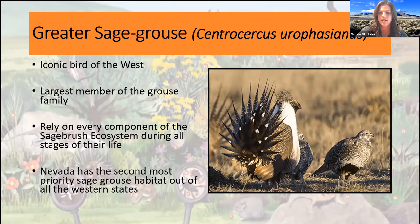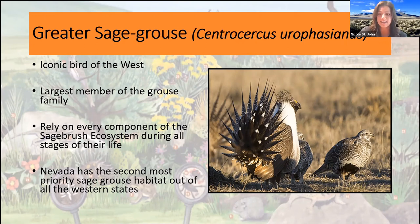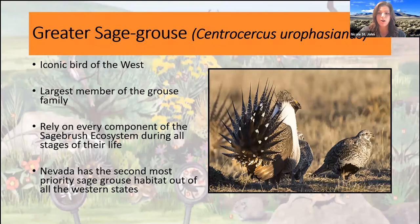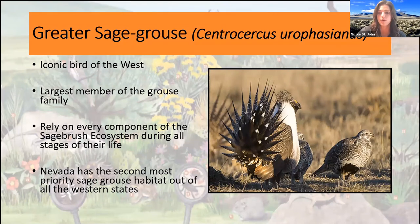These guys rely on the sagebrush ecosystem for every aspect of their life cycle — they rely on it for mating or lecking, for roosting, for nesting, raising their young, and also for food. Their diet consists of grasses, forbs, insects, and sagebrush leaves — they heavily rely on sagebrush leaves particularly in the winter. Just like the pronghorn, these guys also have an ability to get around those harsh compounds found in the sagebrush leaves — they actually excrete a blackish-green tar known as a cecal tar, which is just the compounds they aren't able to digest. Nevada actually has the second most priority sage-grouse habitat out of all the western states.